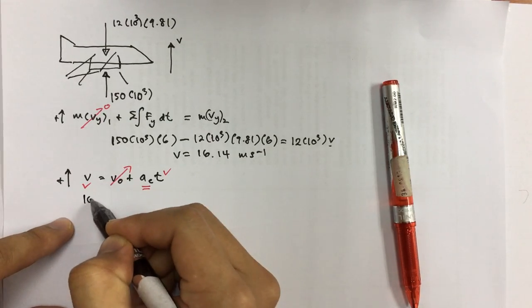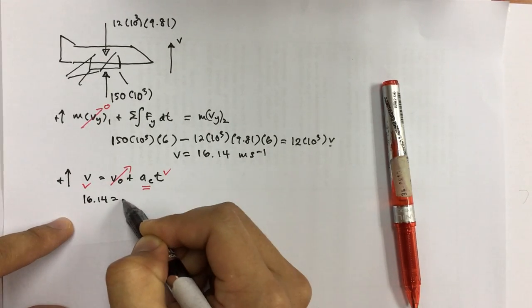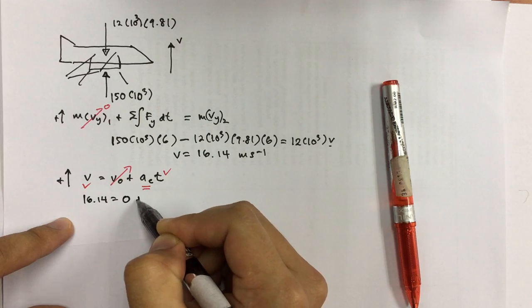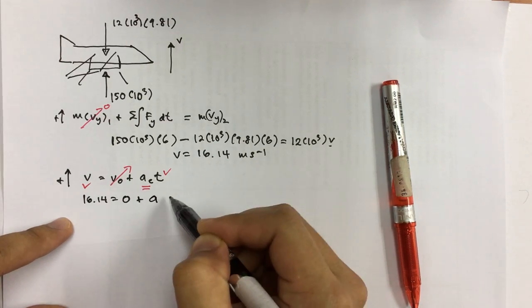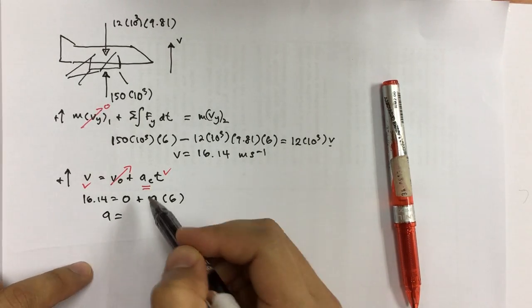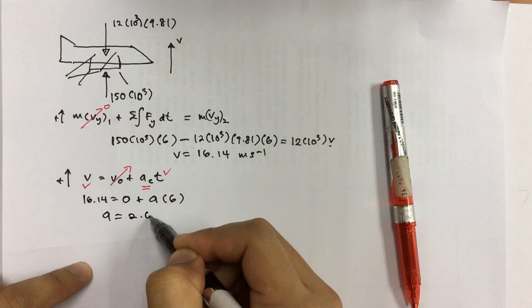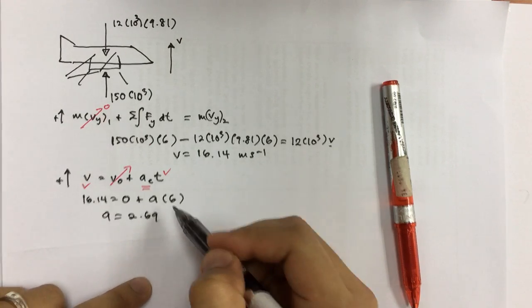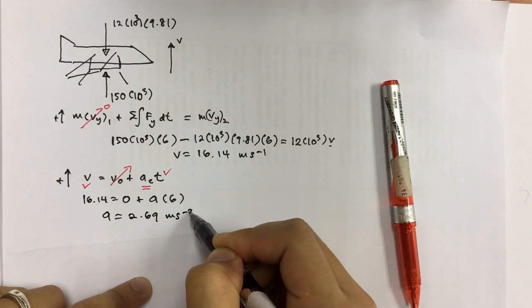So this is going to be 16.14. This is going to be zero. This is going to be A, and this is going to be 6 seconds. So we're going to get A. So A equals to 2.69 meter per second per second.